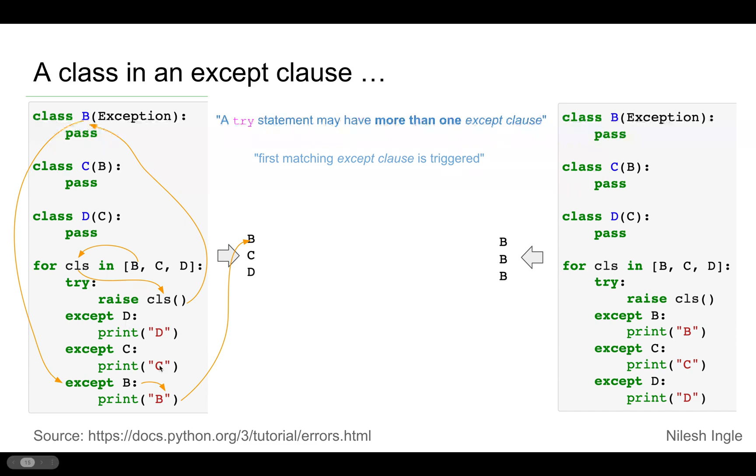And so on for the last one, we print D. And that's how in this case, what's happening is because the order of these is in kind of descending order, we were able to identify and print the exact name of the errors that were raised.